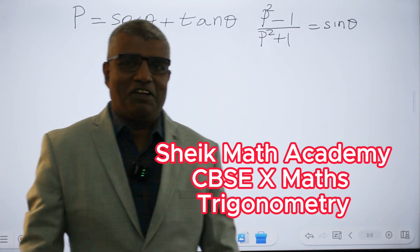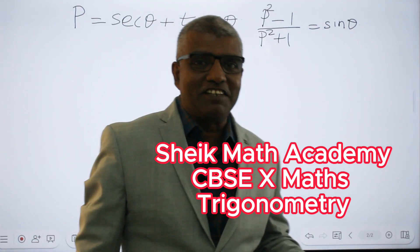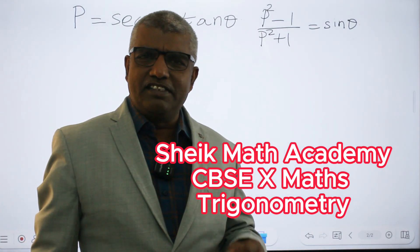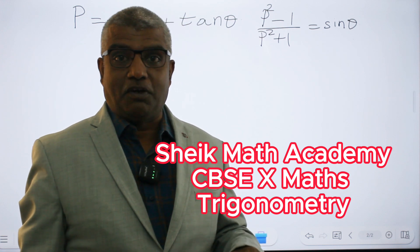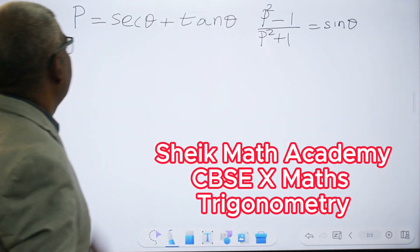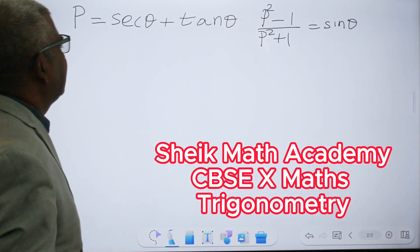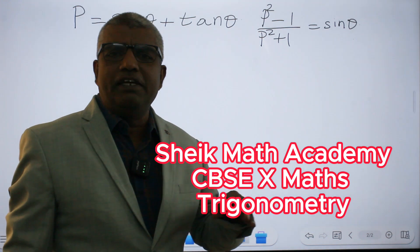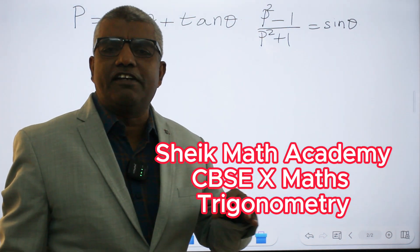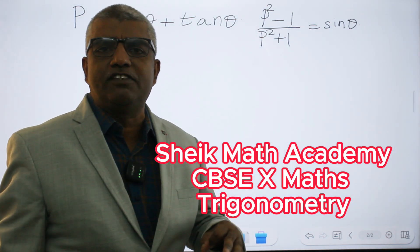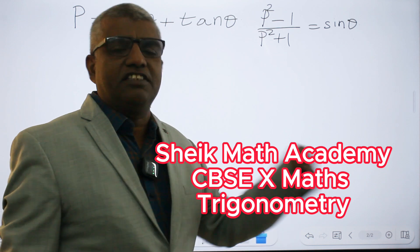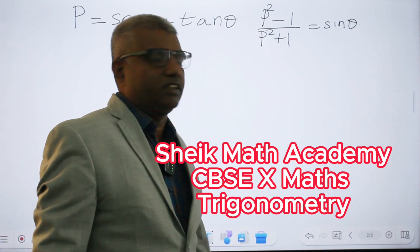Welcome to Seek Math Academy. In this lesson we are going to see CBSE grade 10 max trigonometry topic. Look at the question: P equals secant θ plus tan θ. We have to prove that P squared minus 1 over P squared plus 1 is equal to sin θ.